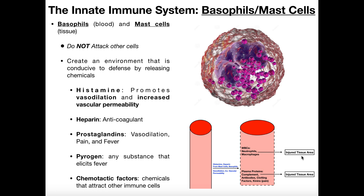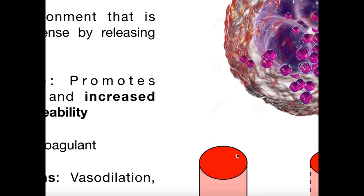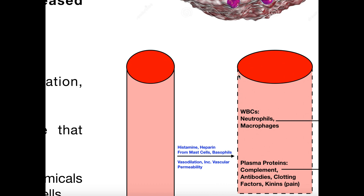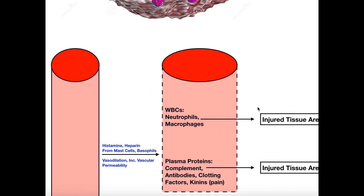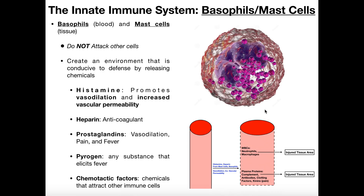Just dilating the blood vessel doesn't do you any good if the things in the blood can't cross into the interstitial area. Blood vessels have gaps between them, but generally those gaps are not big enough to allow things to move through very quickly. White blood cells can squeeze through via diapedesis, but to get things through to the interstitial area effectively, you need increased vascular permeability — that's what histamine does. Histamine increases the size of the gaps between the endothelial cells in the blood vessel, so all sorts of substances can move through those gaps to the infected area, including white blood cells, complement proteins, and antibodies.